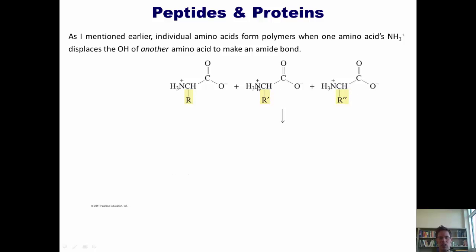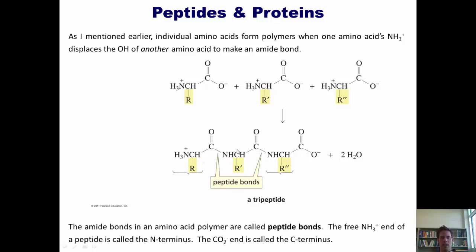So if I have three amino acids, and each of these individual amine groups comes in here, electrons go up, electrons go down and kick off the OH after a proton transfer, I get this, and you'll notice that each one of these bonds, the nitrogen bonded to a carbonyl, is an amide bond. These amide bonds in an amino acid polymer are called peptide bonds.